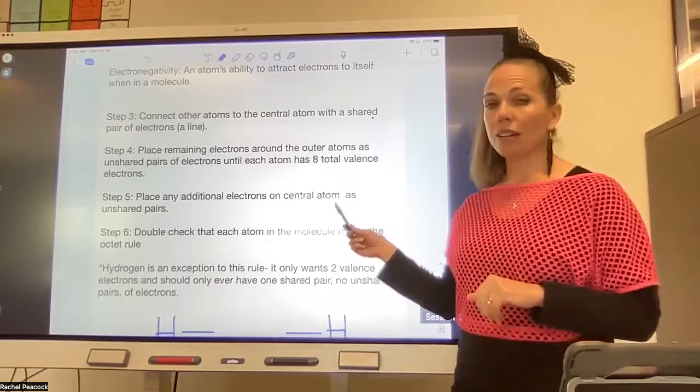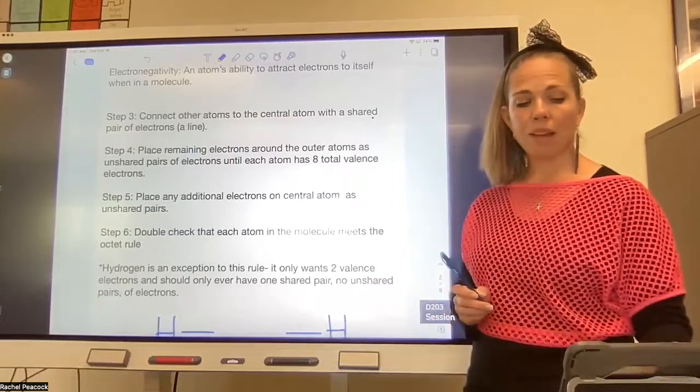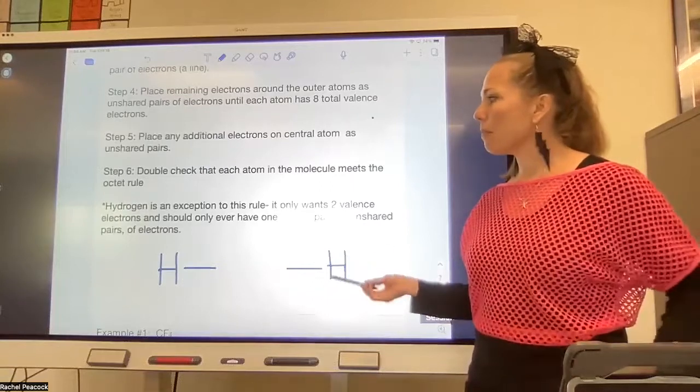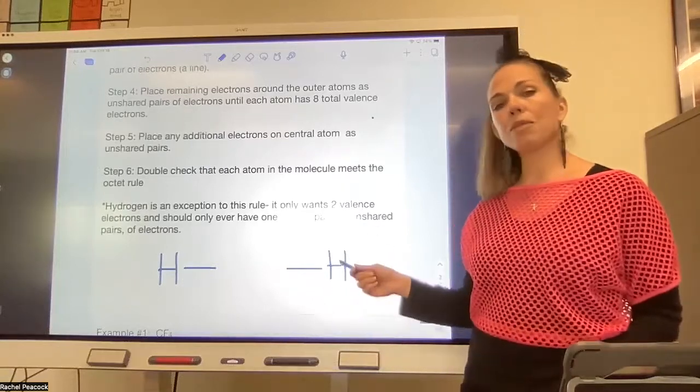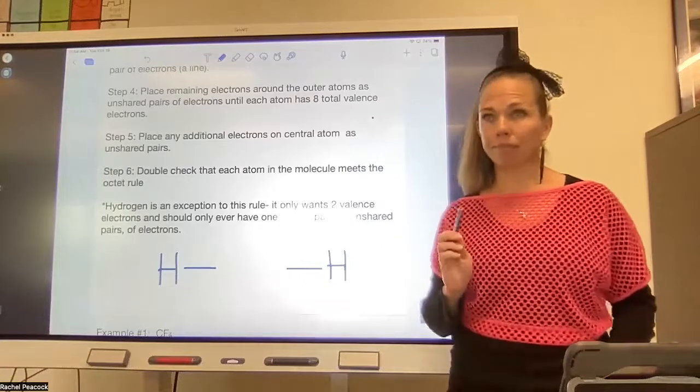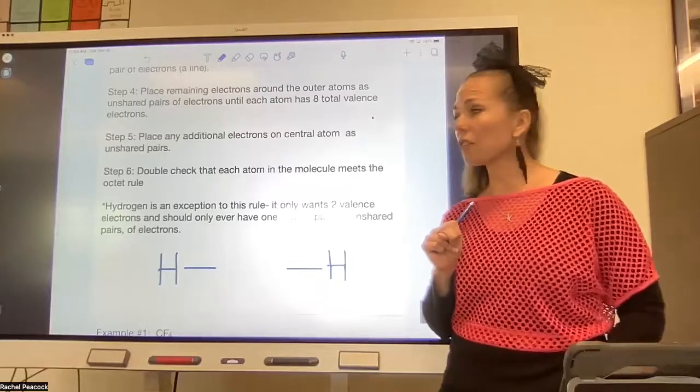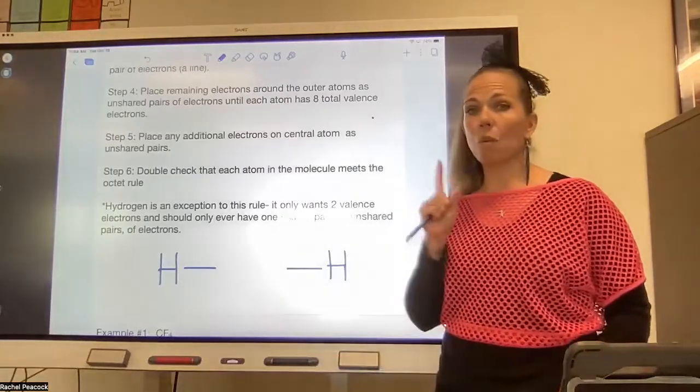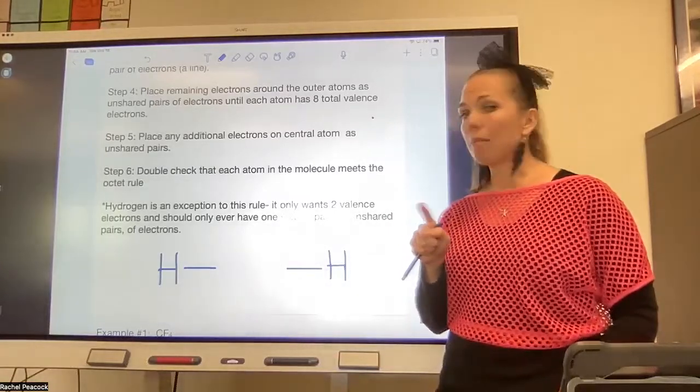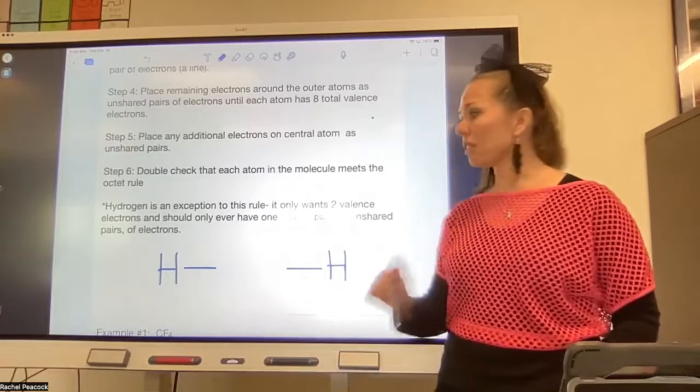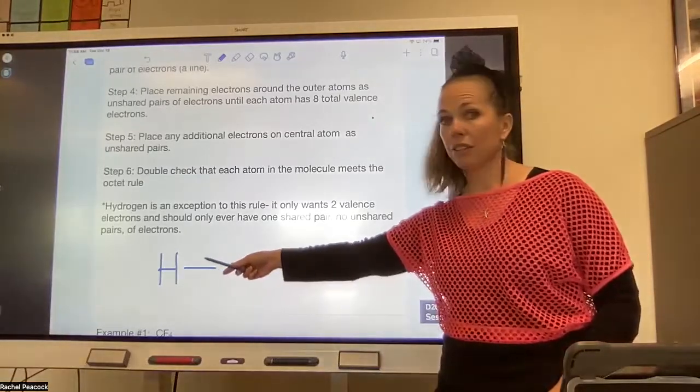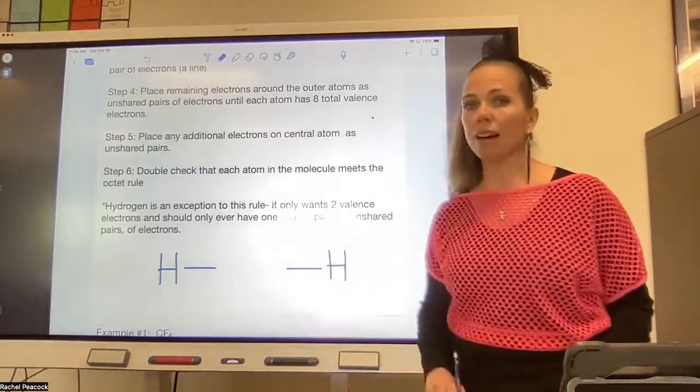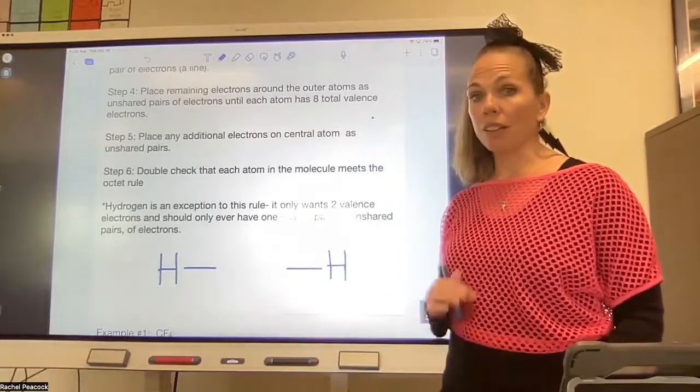The big exception is hydrogen, because remember hydrogen likes to be like helium. Helium only has two valence electrons, and so as a result hydrogen's only going to have one line. There will never be any dots on hydrogen, it'll just be a line. So if hydrogen's on the left you'll see a line coming off to the right, if hydrogen's on the right you'll see a line coming off to the left. That's the only way that hydrogen will look. There are never going to be any dots on hydrogen.